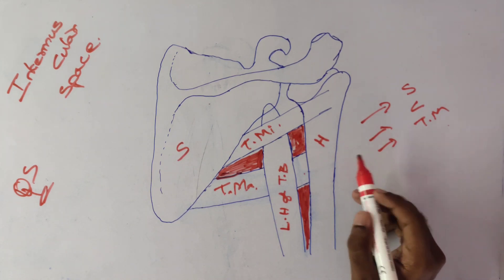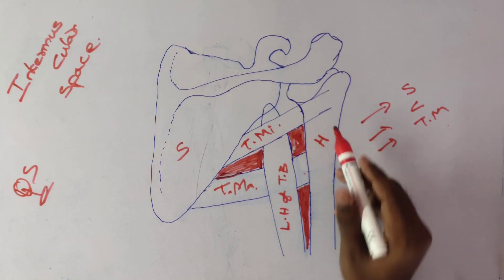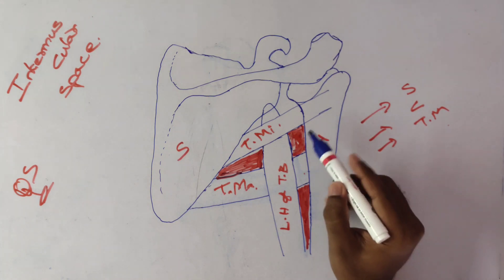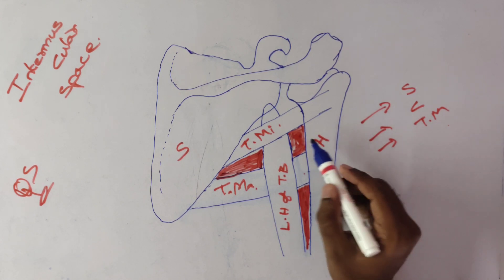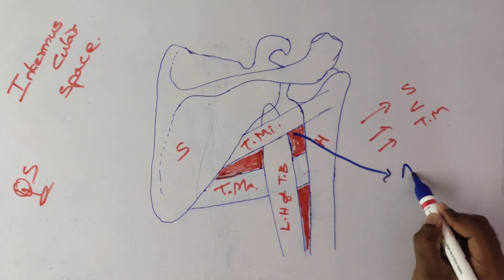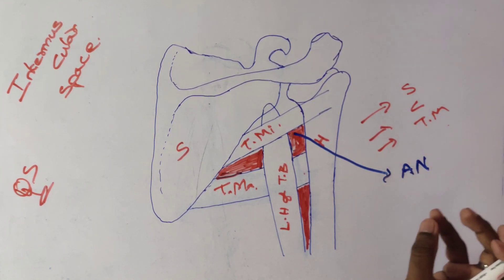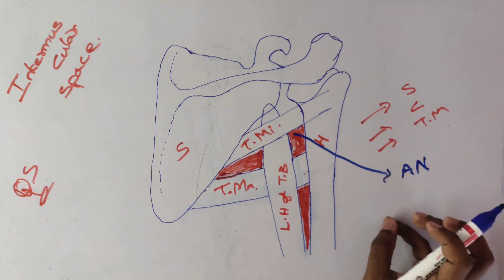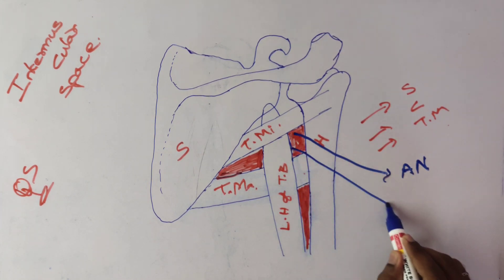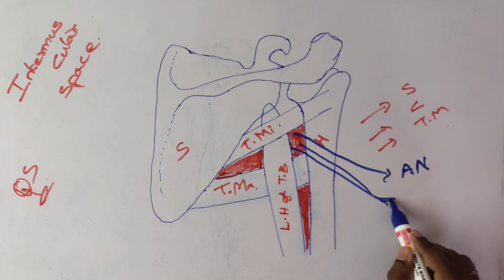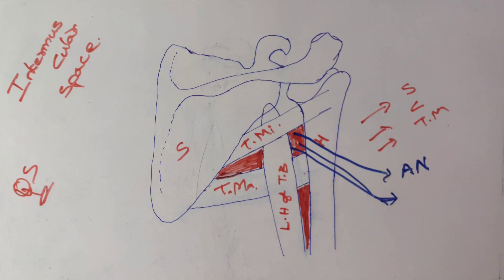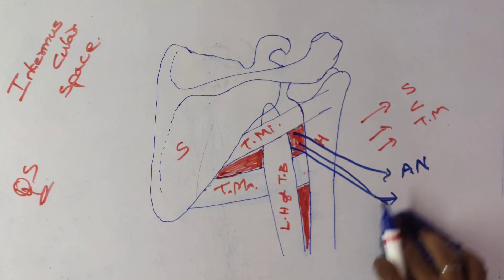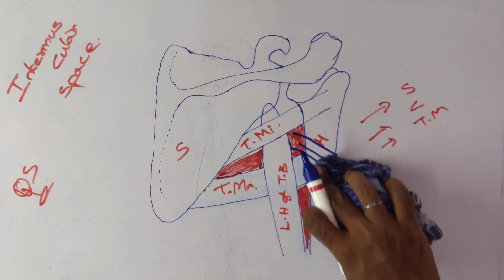The contents present in the quadrangular space are: the axillary nerve — shown in yellow in the diagram — as well as the posterior circumflex humeral vessels, meaning both the posterior circumflex humeral artery and vein. These are the boundaries and contents present in the quadrangular space.